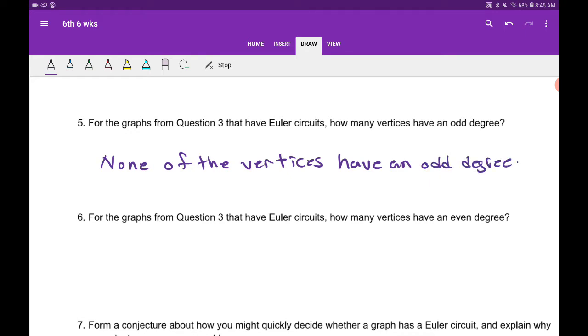And for the graphs from question three that have Euler circuits, so again we're looking at graphs one and three, how many vertices have an even degree? Well, they all have an even degree.